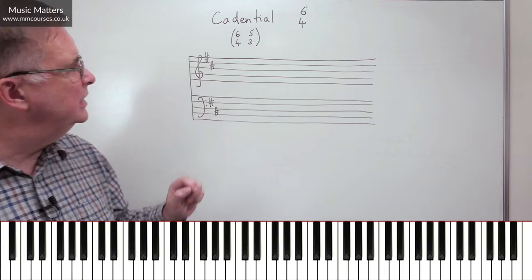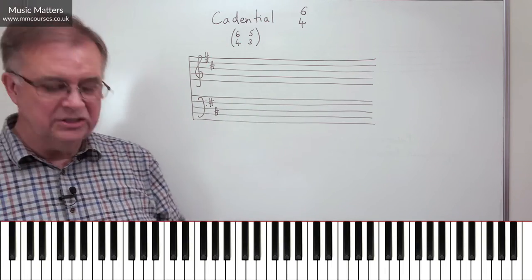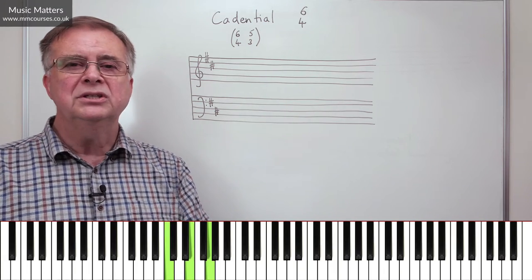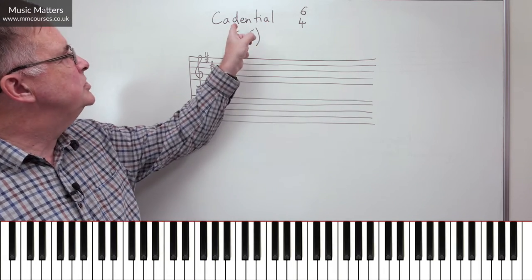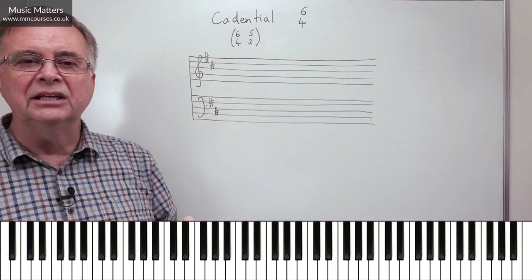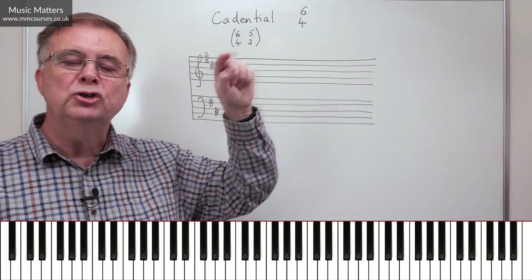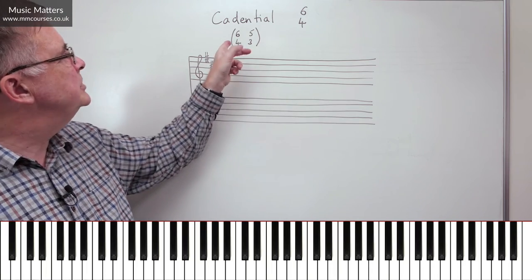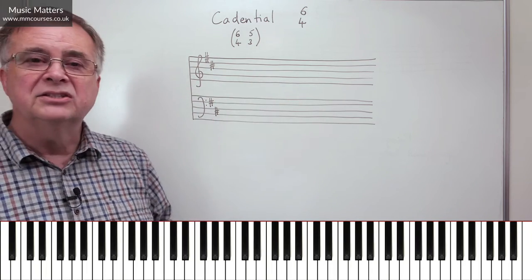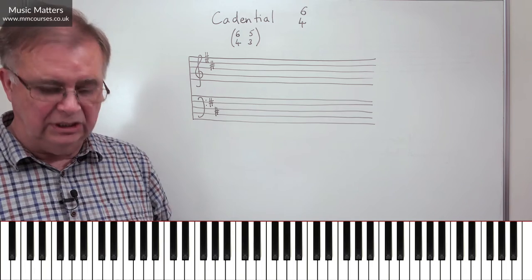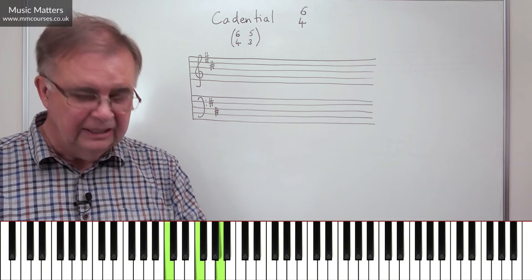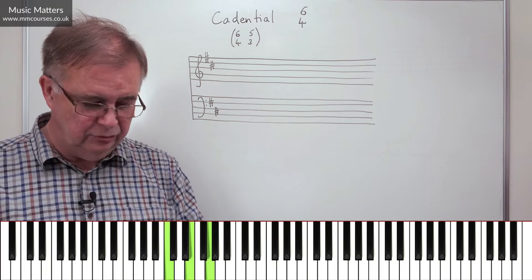Another thing to note as well is that the idea of this is not just to say it's this chord followed by this chord, but it's also to say whichever part has the 6, the same part should move to 5, so it's a kind of melodic thing as well. And whichever part has the 4, the same part should move to 3. So, say for example, I take this example we've just given, 6-4 going to 5-3, okay?